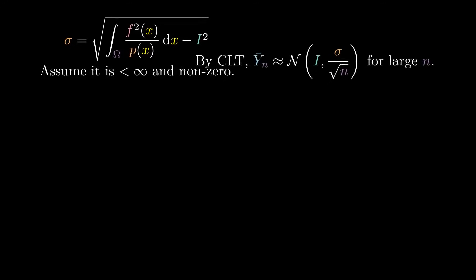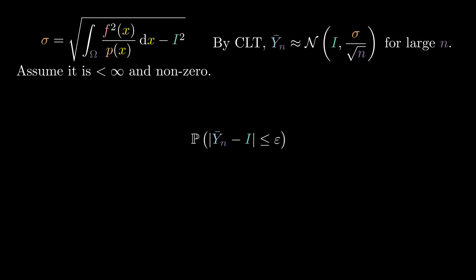Now we want to know the probability of our estimation error to be less than or equal to a fixed upper bound. We will express this bound in terms of the standard deviation of the normal approximation.